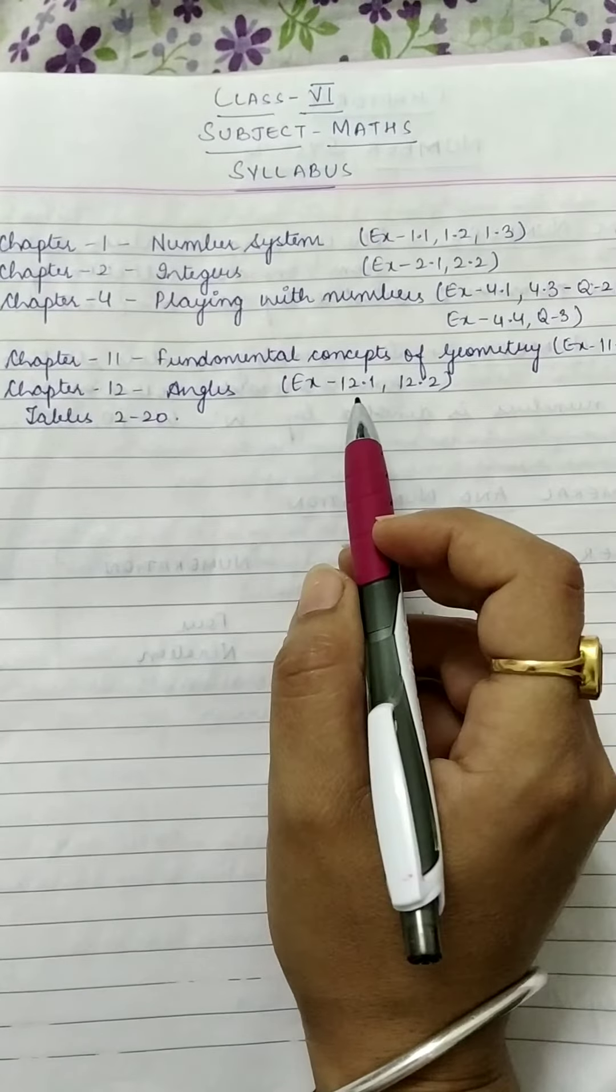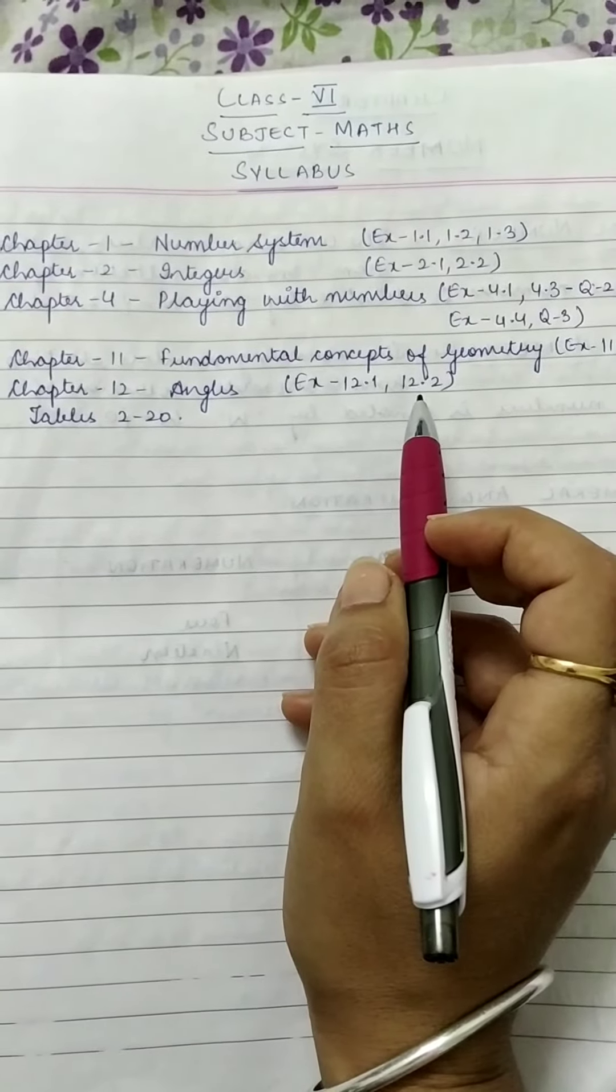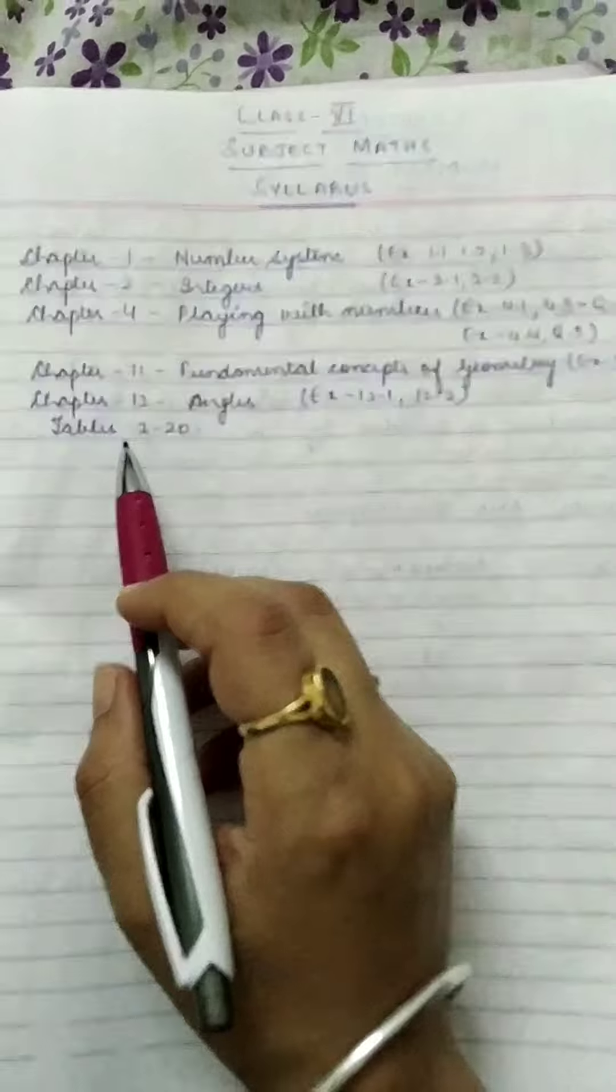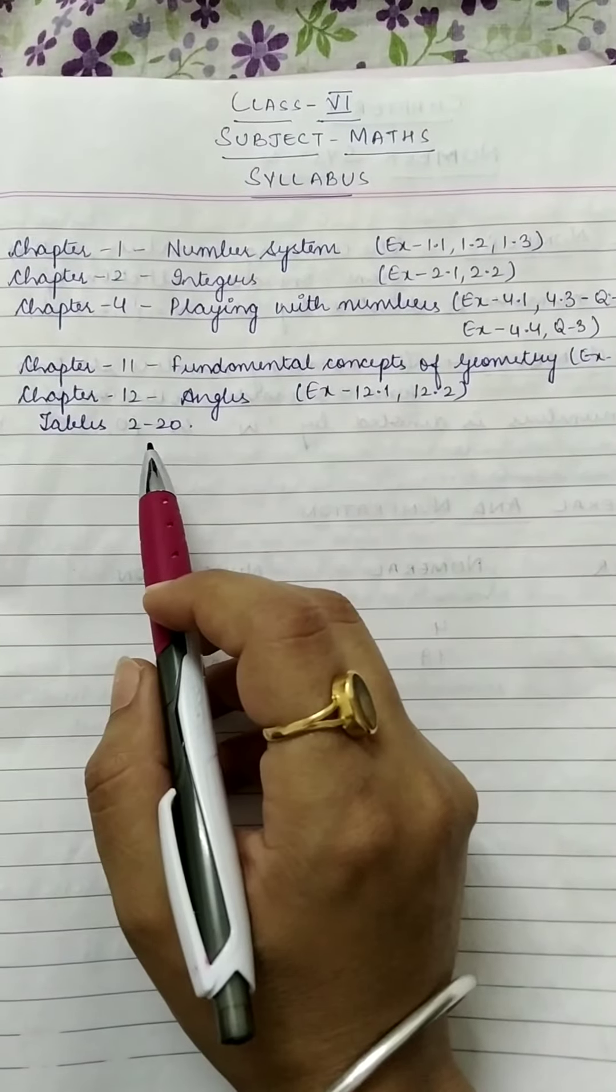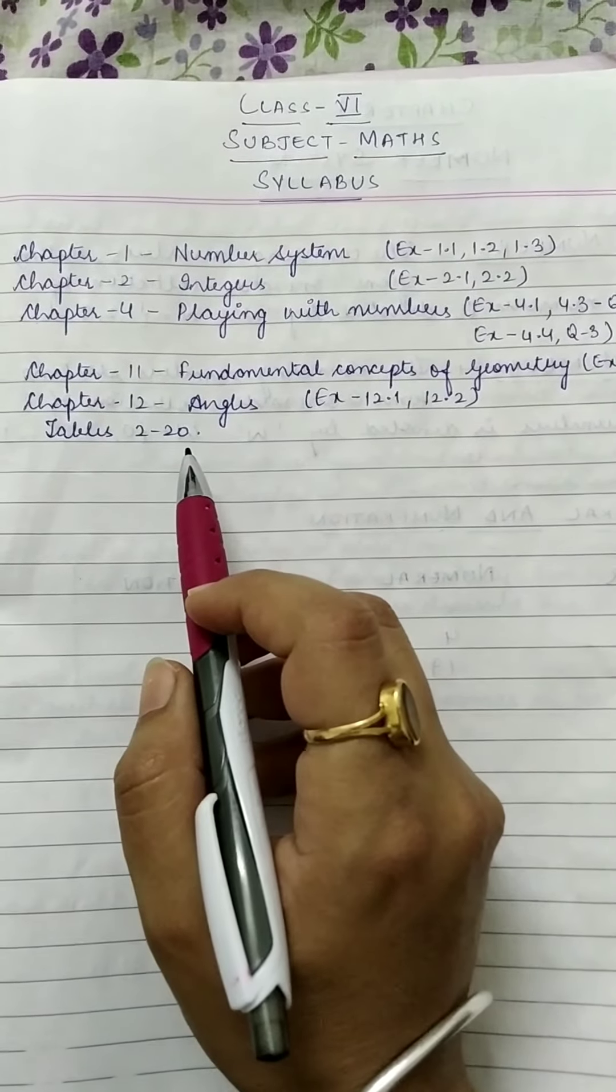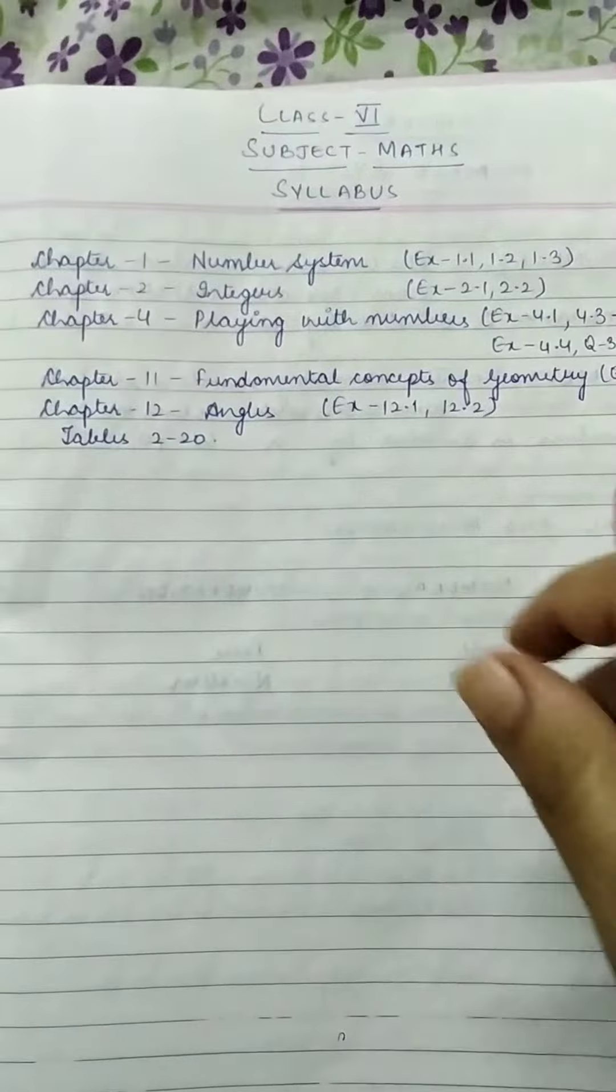Exercise 12.1 and 12.2. Along with these five chapters, there are tables also - tables from 2 to 20. So this is your syllabus of first term. Now I'm going to start teaching.